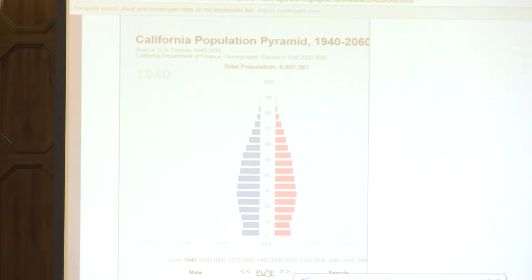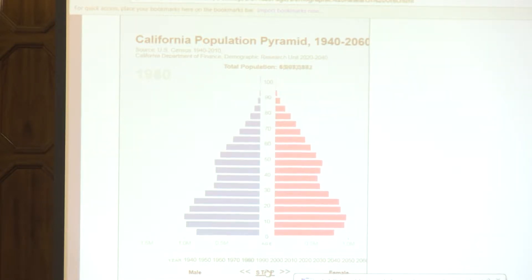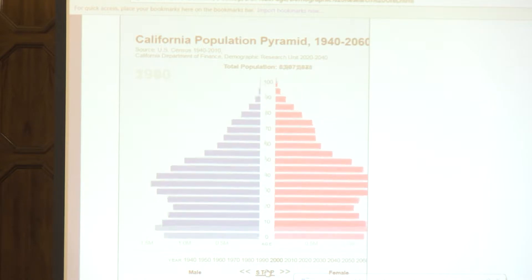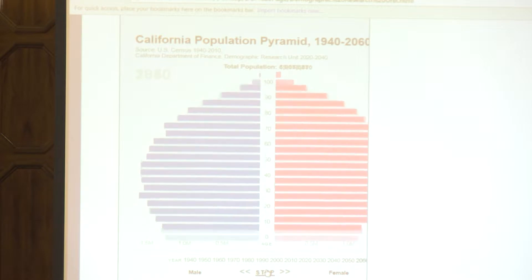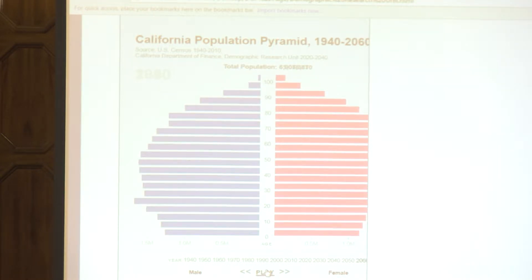It starts in 1940 when our population was about 7 million, goes every 10 years, becomes more like a pyramid. You see the baby boomers in that big bulge. And then it becomes more cylindrical as people stop having kids so much. This goes out to 2060 and you can see it's almost spherical — lots of adults, fewer kids. What does that do to our state budget? What does that do to how we should be planning for our social contract, for our base case scenarios? So that's a big thing.